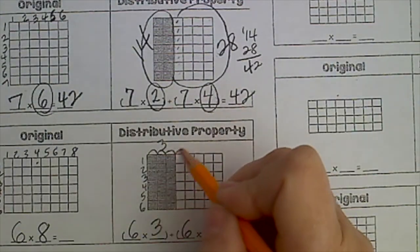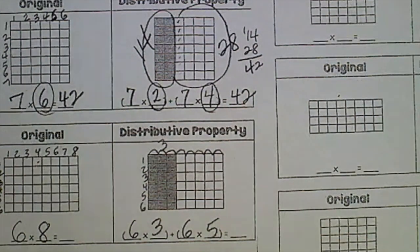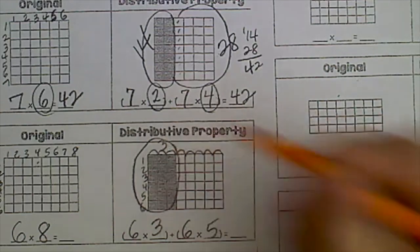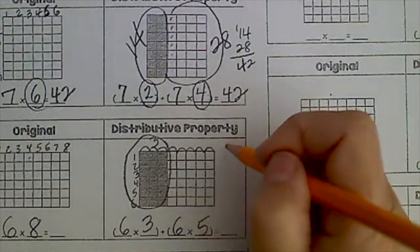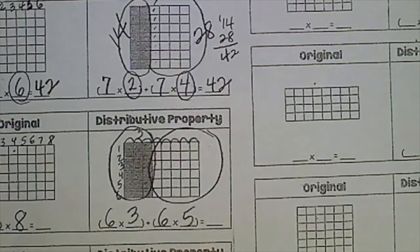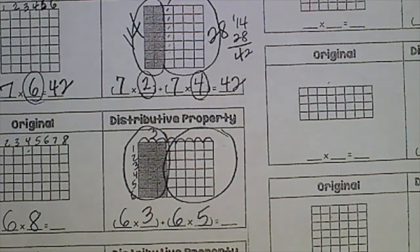And there's five. So this little problem here represents six times three, and this problem over here represents six times five. Now you may not know what six times three is, but I want you to think six times two is twelve, add another six, that's eighteen.